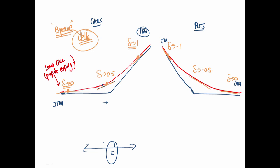Is the red line very curved? When we're out of the money for a call or a put, the red line is relatively straight — delta is kind of stuck at zero, so gamma is low. Similarly, when deeply in the money, the delta is stable at one — it doesn't move around very much — so gamma is also low there.